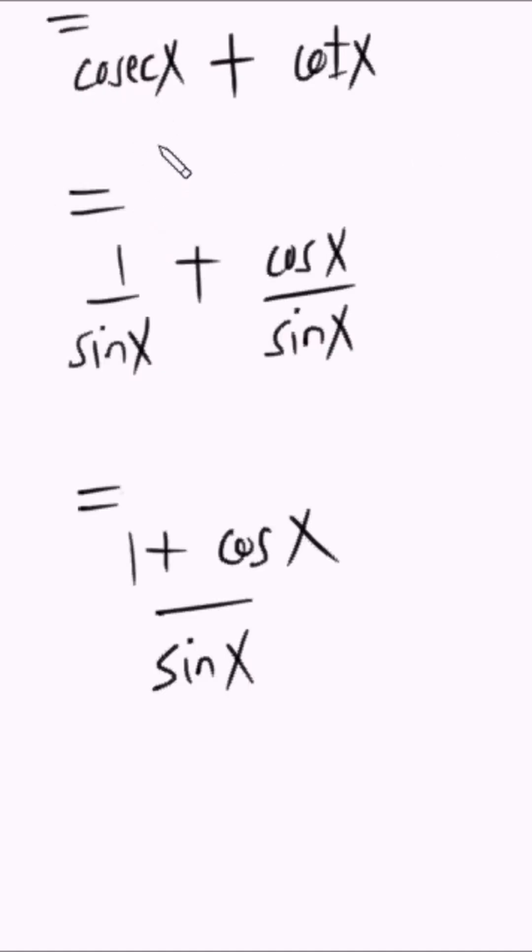Well, cscx is 1 over sinx and cotx is cosx over sinx. This then becomes 1 plus cosx, all of it over sinx.